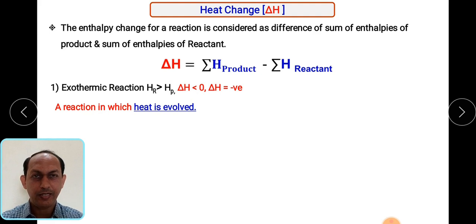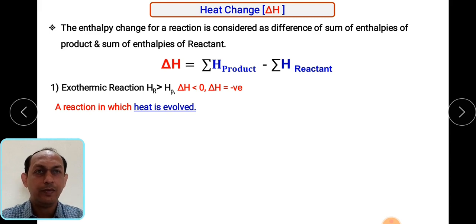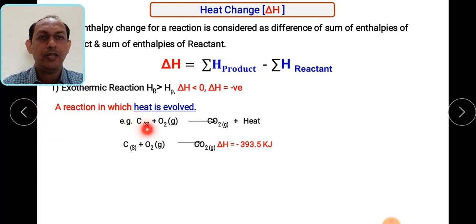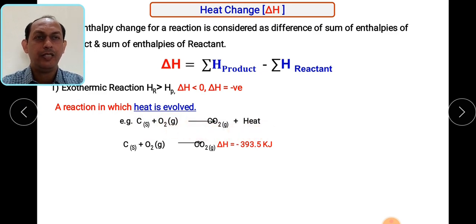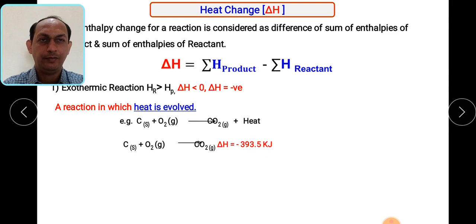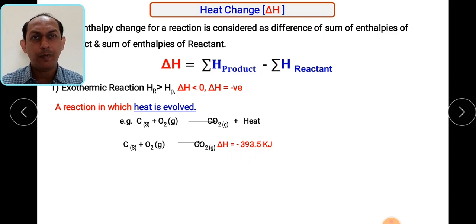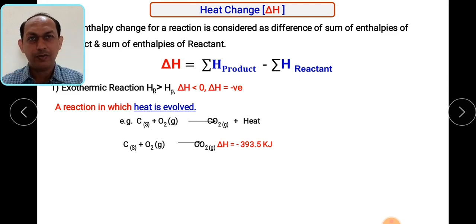The negative sign indicates that the heat is evolved — given out from system into surroundings. For example, carbon in solid state plus oxygen gas combines to form CO₂ gas, and some heat is given out. The standard value for this reaction is minus 393.5 kJ. This amount of heat is evolved, confirming it is an exothermic reaction — the heat is given out from system into surroundings.